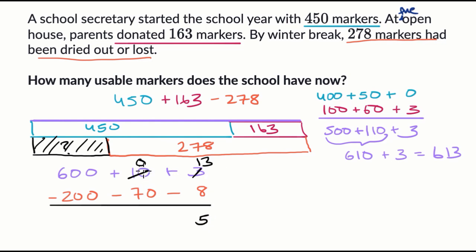Now we have a problem in the tens place. We have no tens and we want to subtract 70. So let's take 100 from the hundreds place. So if we take 100, this becomes 500, and we put that 100 over here. This becomes 100. And I get 100 minus 70 is 30.